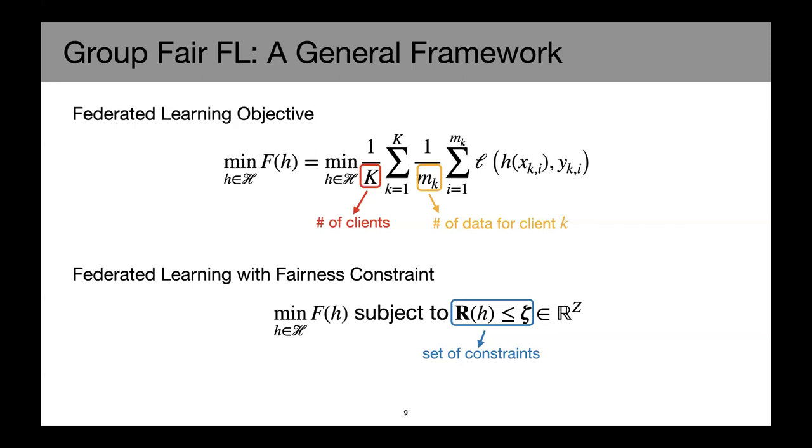So some basic setup of a group fair FL framework. The standard federated learning objective aims to find the best model for the average loss over all the clients and all the data for each client K. So we can formalize the federated learning with fairness constraint problem as a constraint optimization by having this constraint set. We're trying to find a best model subject to some fairness constraint set.